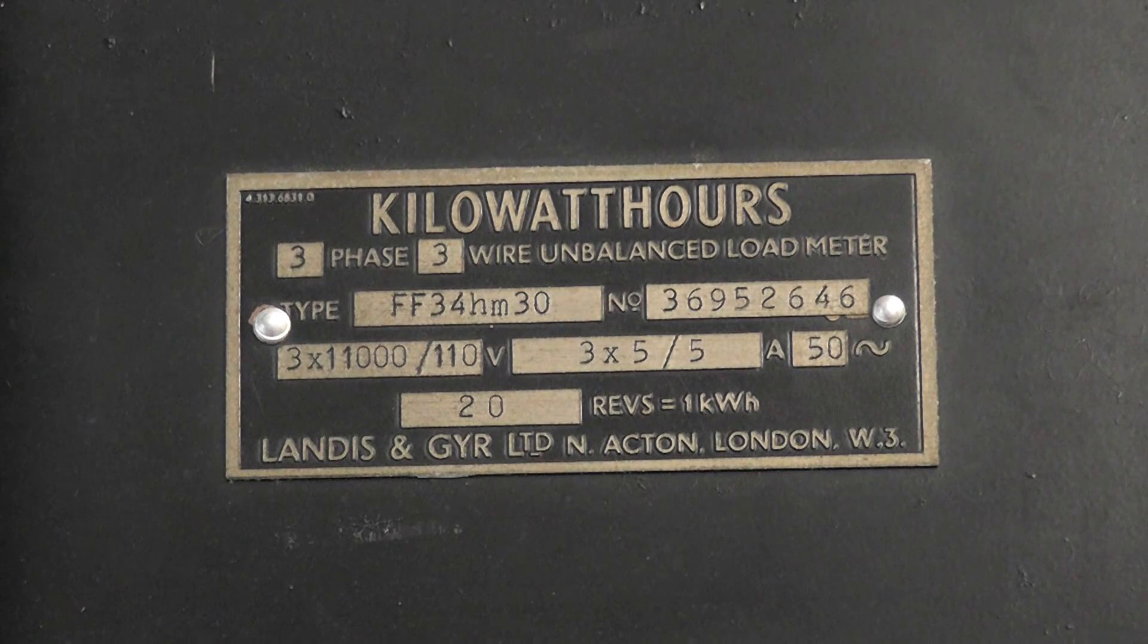This meter is rated at three times 110 volts, but the registers are calibrated to read two units for kilowatt hours at 11,000 volts, which is visible here. The type is FF34HM30.